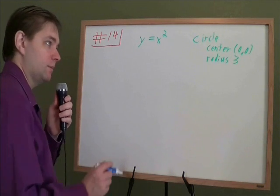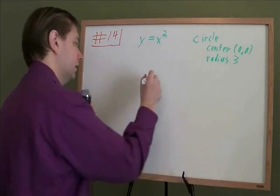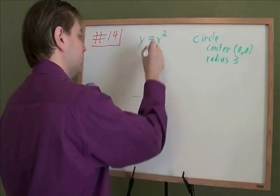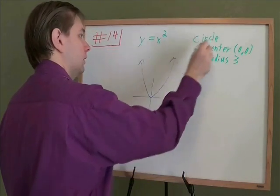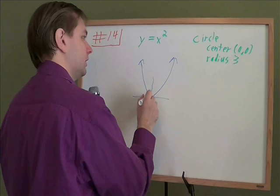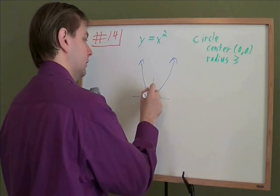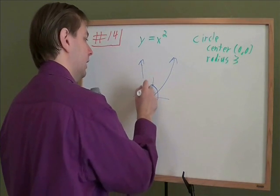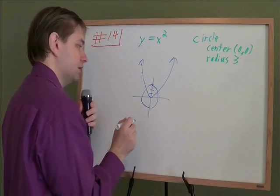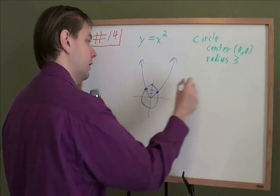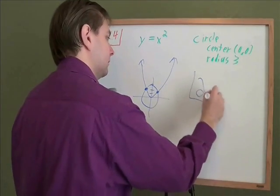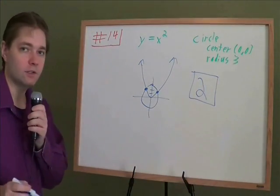This problem basically comes down to knowing what the graphs look like. Y equals x squared is your basic parabola graph, which looks like that. A circle with your center at the origin and a radius of 3 looks about like that. And at how many places do these two graphs intersect? Right there and right there, two times. That's all there is to that problem.